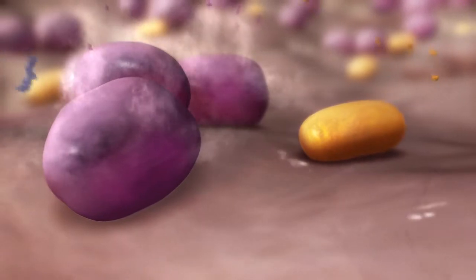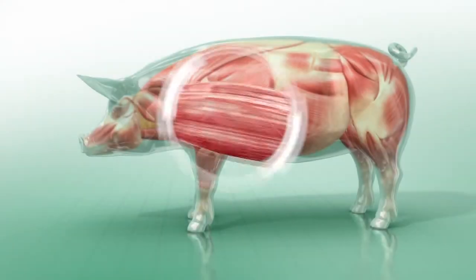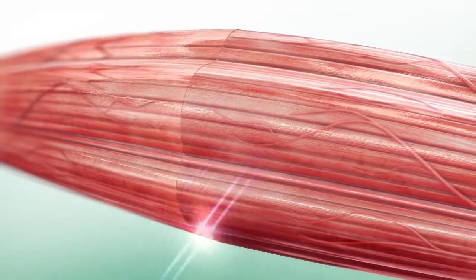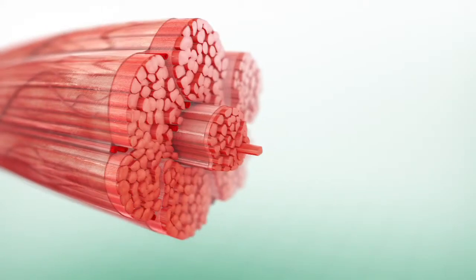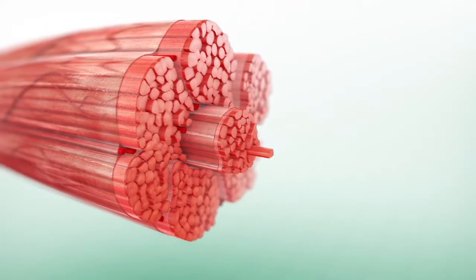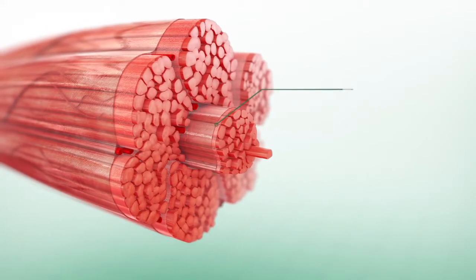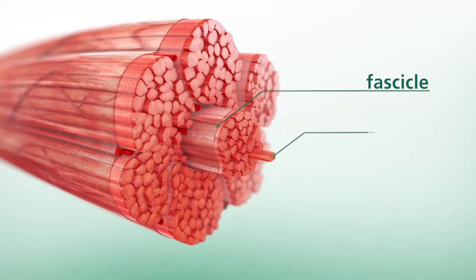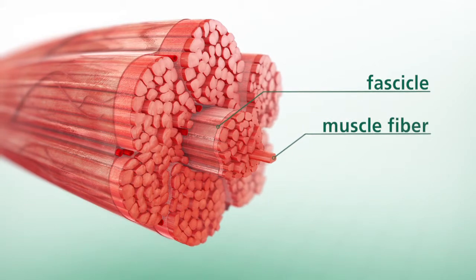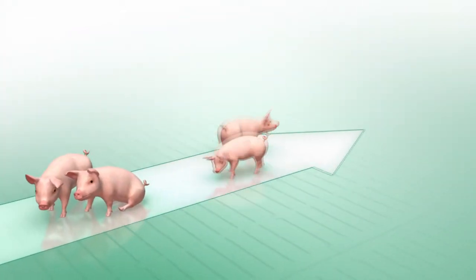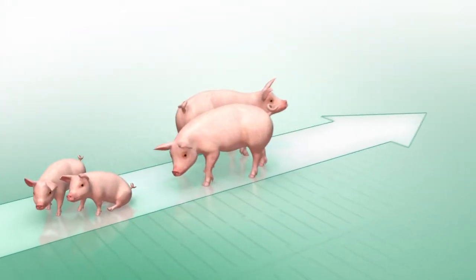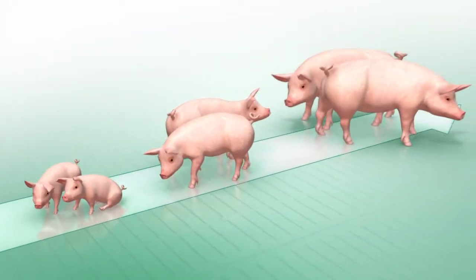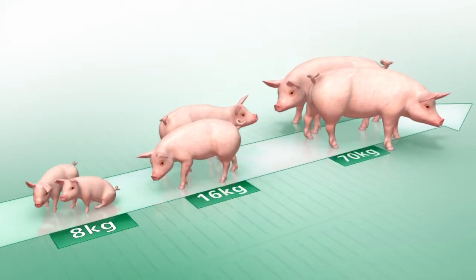Let's take a closer look at skeletal muscle tissue in swine. The muscles are made up of fascicles, which in turn consist of muscle fibers. Enhancing protein synthesis in the cells of the muscle fibers results in muscle growth.